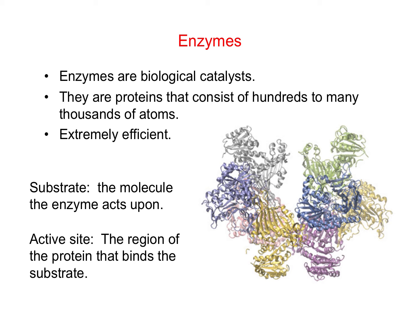The last topic related to catalysts is enzymes. Enzymes are biological catalysts — they are huge molecules, they're proteins, and they can consist of anywhere from hundreds to many thousands of atoms. This picture of a protein shows how biologists often represent protein molecules, including enzymes. Each feature, such as the alpha helix shown here, may include tens or hundreds of atoms, and there are many of them, representing thousands of atoms. The substrate is the molecule the enzyme acts upon, and the active site is the particular region among those thousands of atoms where the catalysis happens and where the substrate interacts with the catalyst.